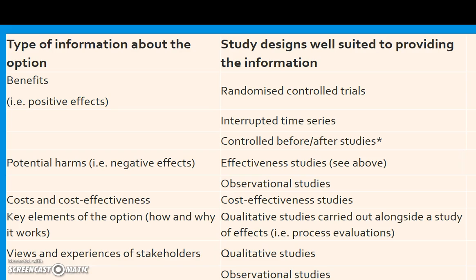As we've previously said, randomized controlled trials are not a good source for potential harms, because unless an adverse effect is frequently reported, it will not occur often enough to be picked up in the relatively small population of a randomized controlled trial. It may be found in larger studies, perhaps in controlled before-and-after studies, but typically we would be looking for observational studies.